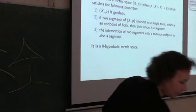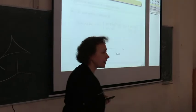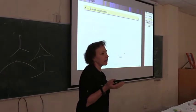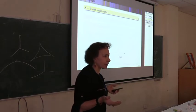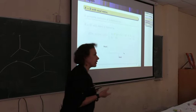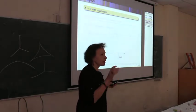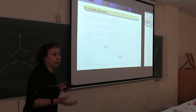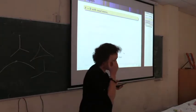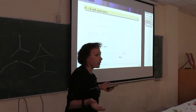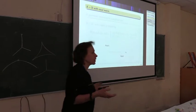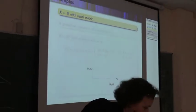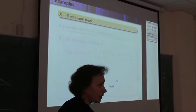Some examples of R-trees and where they appear: they appear as Brownian-like trees in probability theory, and as limits of group actions on hyperbolic space. There is a theory, initially due to Ilyari, on free actions on R-trees and small actions, which I'll discuss later.